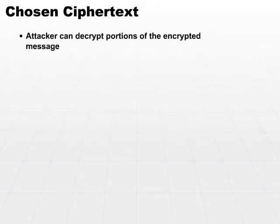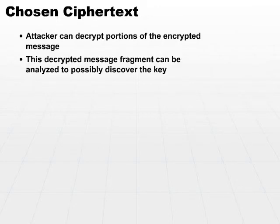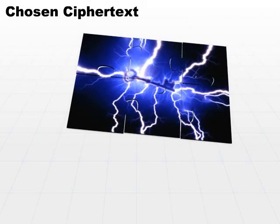If he can decrypt a portion of the message, he can then use the decrypted message fragment to analyze whatever's left and possibly discover the key. Now again, this is an approach — it's an attempt to crack a key. There are lots of different ways this can work, and it's kind of like putting a puzzle together. You use the pieces that work, and you put the rest of them aside until they fit into place.